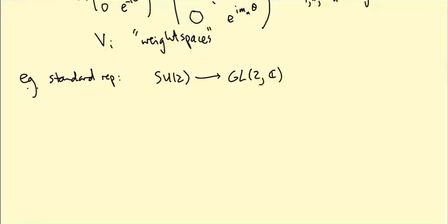And so in particular, if we restrict this, this is just the inclusion map. If we restrict this to the diagonal matrices, then R of e to the i theta zero, zero e to the minus i theta, it's just the same matrix, e to the i theta zero, zero e to the minus i theta. So this is already diagonal.